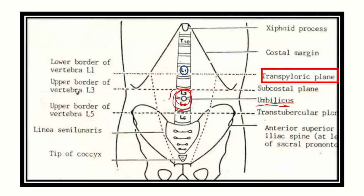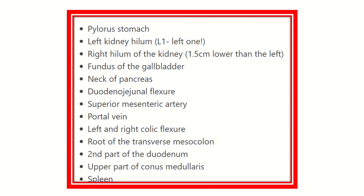Another plane, the subcostal plane, is located in the lower part — between the lumbar 2 and lumbar 3 vertebral levels. The trans-tubercular line is located at lumbar 5. These are the important levels for any type of anatomy exam.